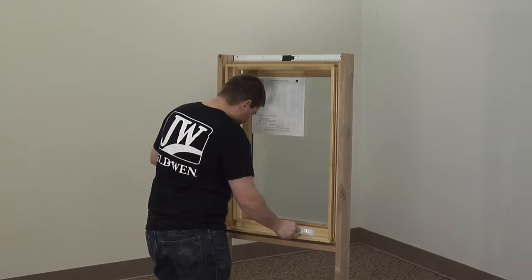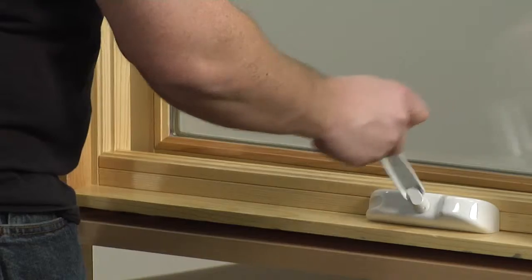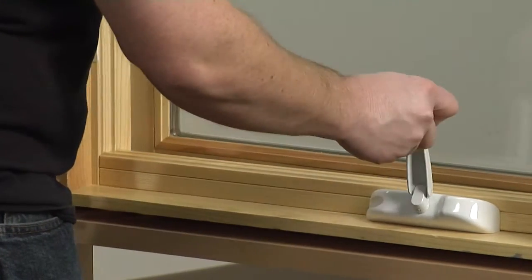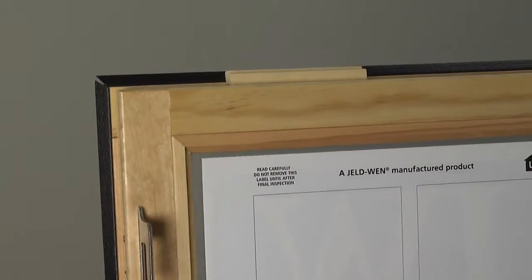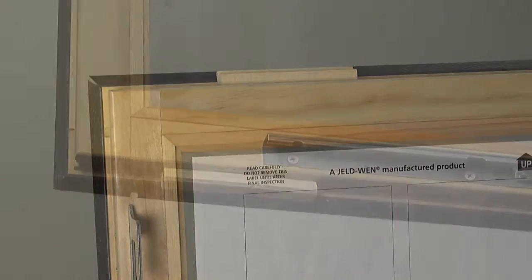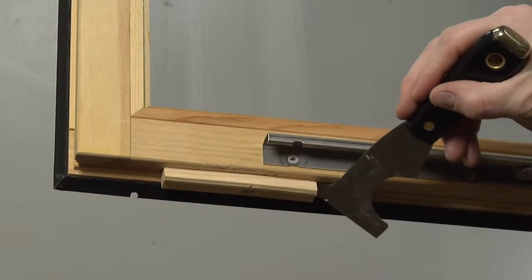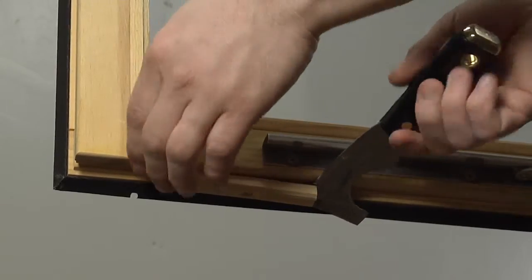If your casement window won't close properly or is misaligned when closed, the shipping blocks may need to be removed. Shipping blocks, located here, are applied in the factory and are only for shipping. You will need to remove them for your window to operate properly.